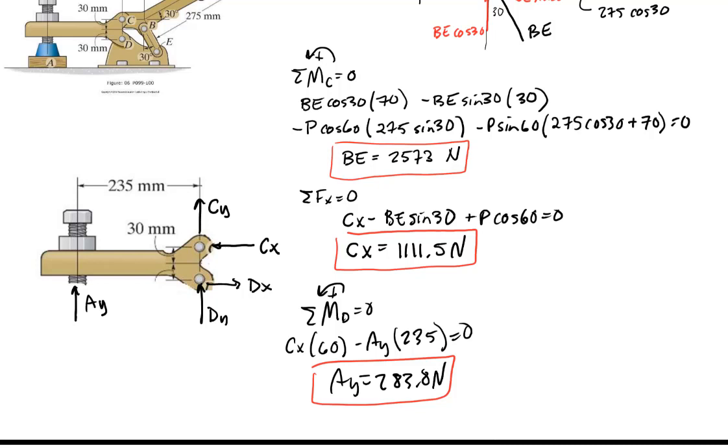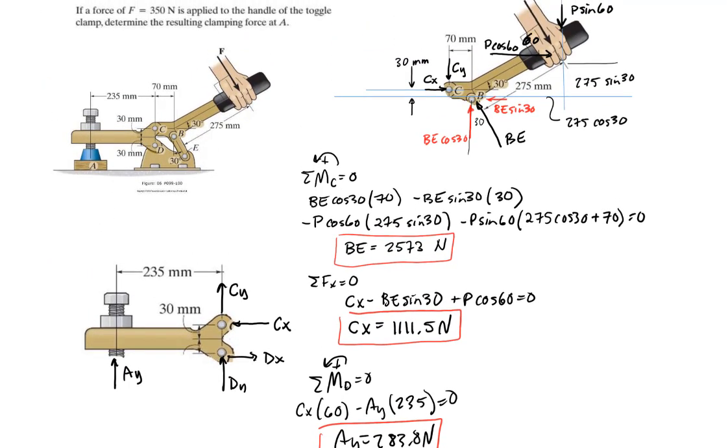The mechanical advantage: what is the mechanical advantage here? Well in this case it's not very good. Mechanical advantage is the output over the input, which is going to be 283 over 350, so it is less than one, which is kind of bad unless you needed it that way for some reason.